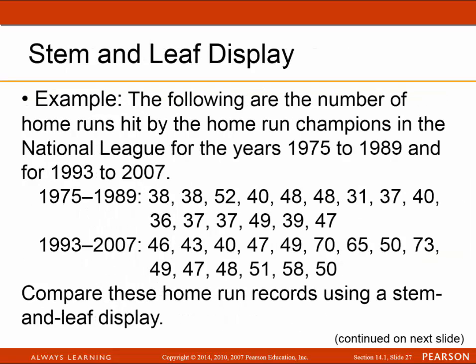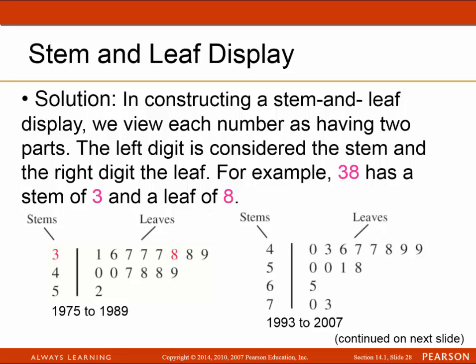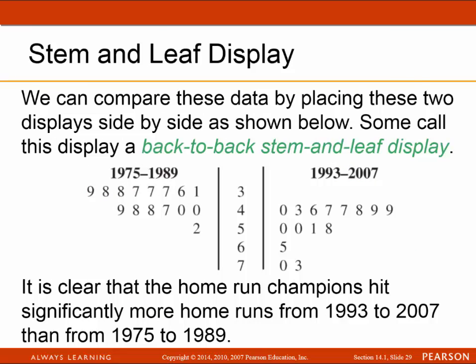The last topic is stem and leaf displays. The following data shows home runs by home run champions from 1975–1989 and 1993–2007. A number like 38 has a stem of 3 and a leaf of 8. We can compare the two data sets using a back-to-back stem and leaf display. In comparison, it's clear that home run champions from 1993 to 2007 hit more home runs than the champions from 1975 to 1989.